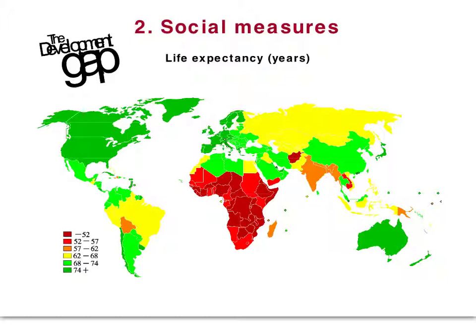Economic development is only one way to measure development. A country can also be said to be developed if the money generated actually benefits the lives of people — in other words, if social development takes place as well. So we're going to move on now to look at a range of social measures, and the first ones will be related to population indicators.